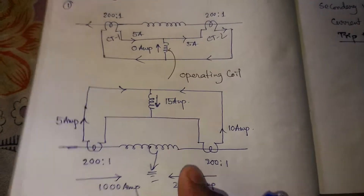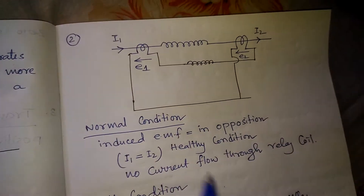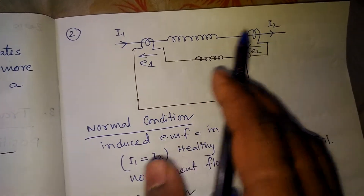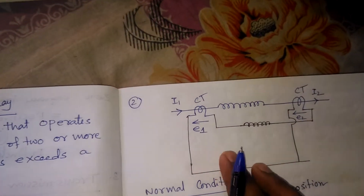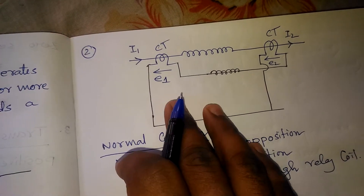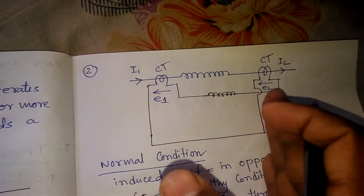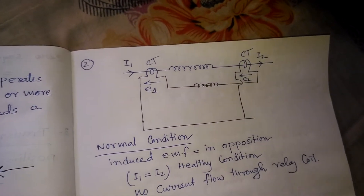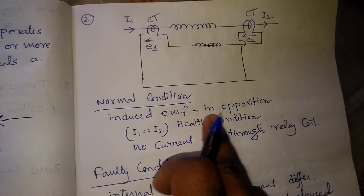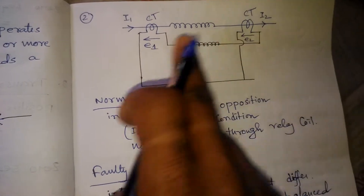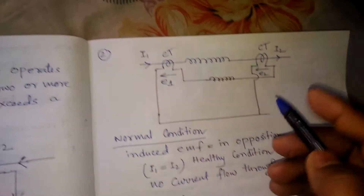The relay will operate and trip the circuit breaker. In the voltage balance protection, we use CTs on both sides and measure the induced EMF. If the induced EMF is equal to each other, in normal condition the induced EMF is in opposition: E1 equals E2, I1 equals I2 — healthy condition. So no current will flow through the relay coil.